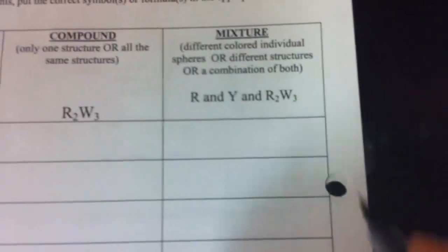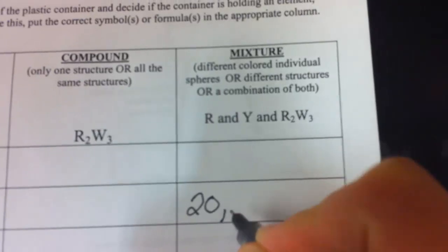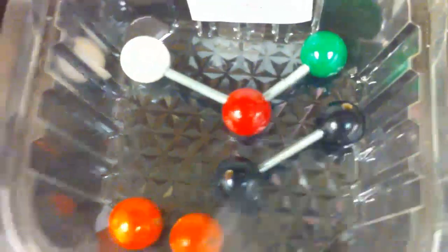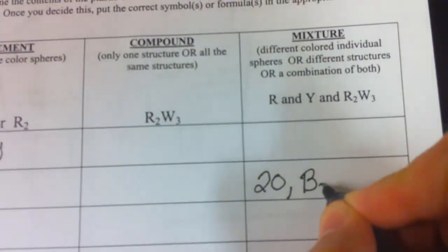So I have to indicate what we have. We have two orange. They're separate, so it's 2O, not O2. Meanwhile, the black one, they're connected, so it's going to be B2.